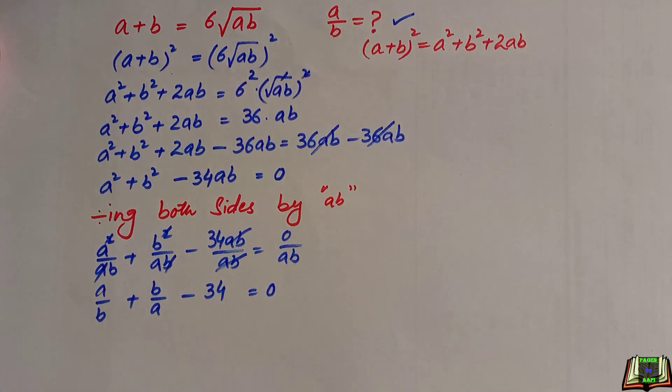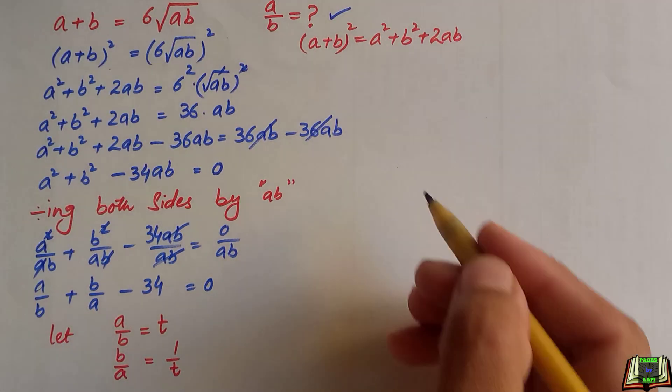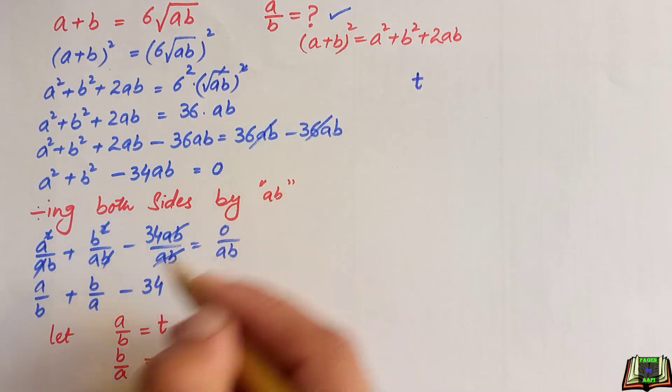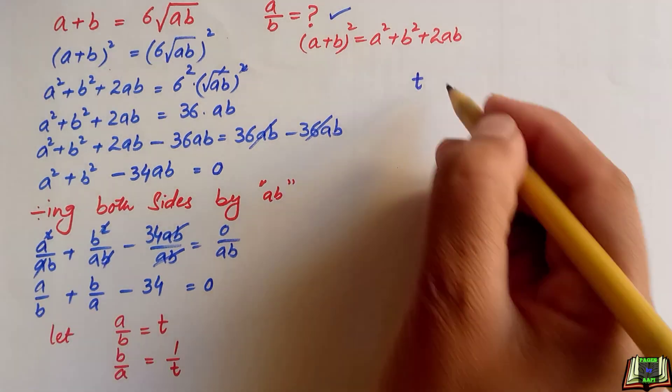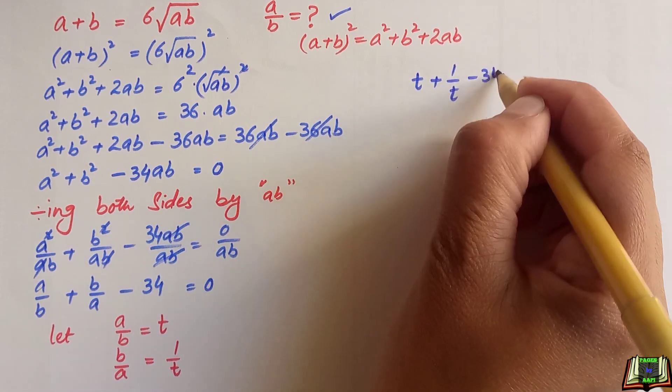Now, let's suppose a over b as t here and if a over b is equal to t, so b over a is its reciprocal so this is equal to 1 over t. After putting these values in this equation, a over b is equal to t plus b over a 1 over t minus 34 is equal to 0.